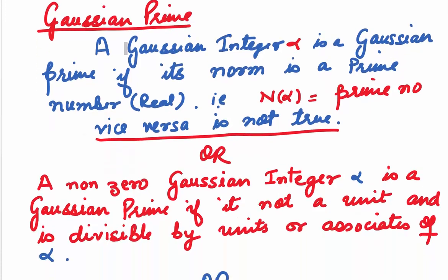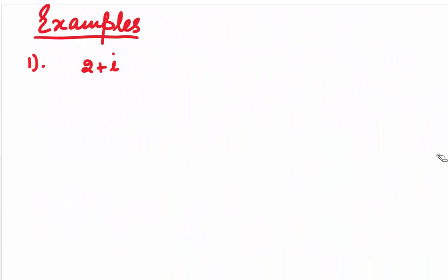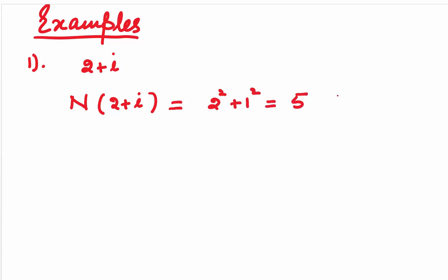Let's look at some examples. We are given the Gaussian integer 2 plus i. Let's check whether it is a Gaussian prime. We find the norm of 2 plus i: it is 2 squared plus 1 squared, which equals 5. Now 5 is a real prime.